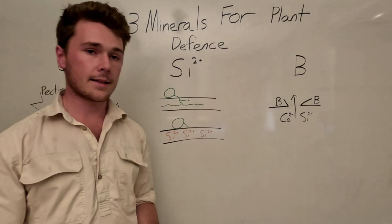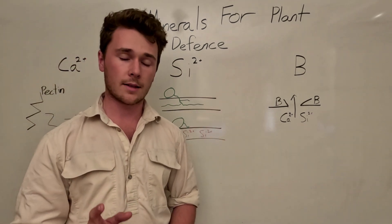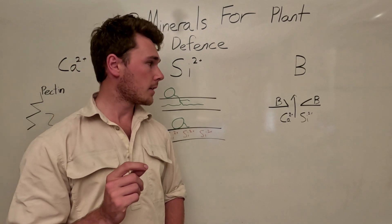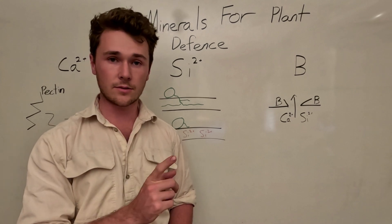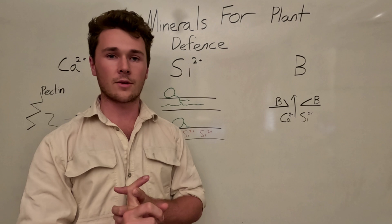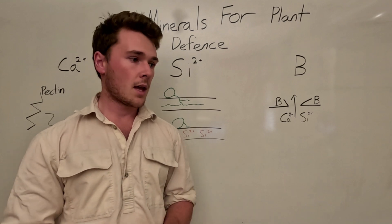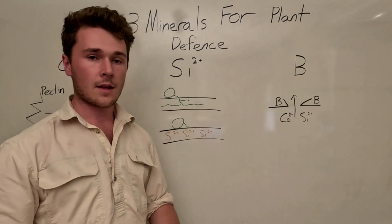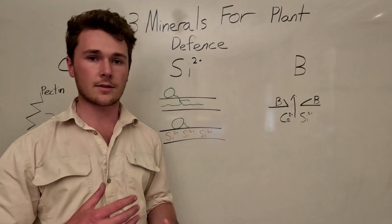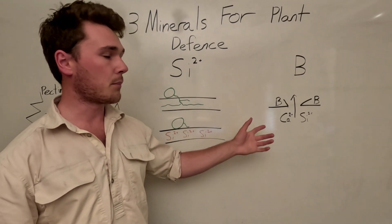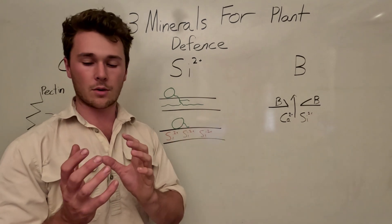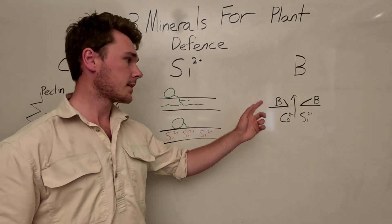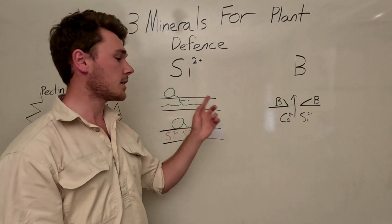Finally we have boron. Boron has a few different functions in terms of cell wall formation. Plants deficient in boron tend to have very weak and fragile cell walls. The second effect boron has is on calcium and silicon — boron is considered to be a translocator of minerals and nutrition. It's very important to have boron, otherwise you get a build-up of nutrients in one particular spot. Having boron allows for the flow of calcium and silicon throughout the plant, especially into our cell walls.